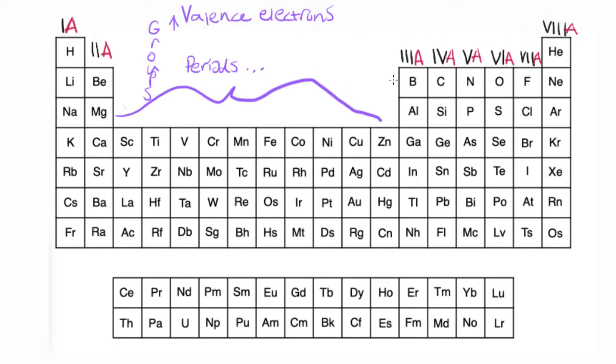So you have to look at these groups to figure out how many valence electrons are in that element. So, for example, in group 1A all of these elements are going to have 1 valence electron. And in 2A they're going to have 2 valence electrons. And then in 3A they're going to have 3 valence electrons.